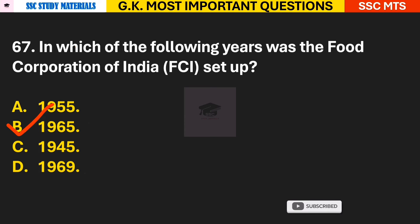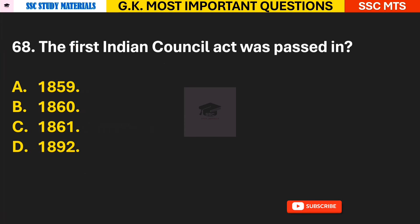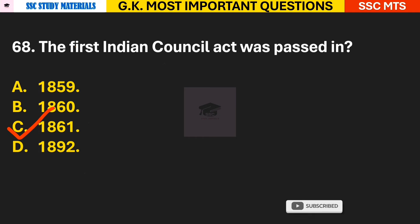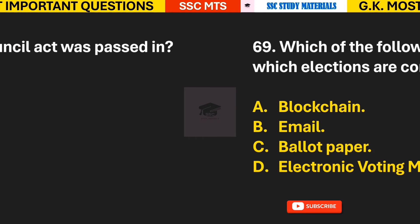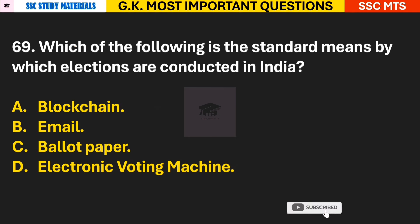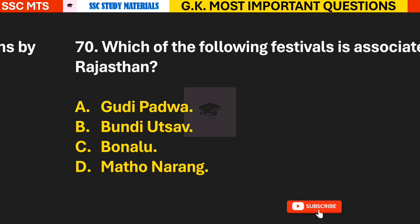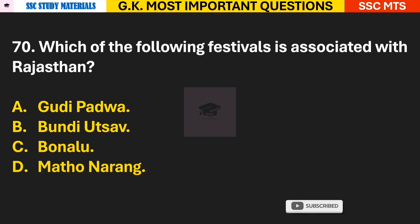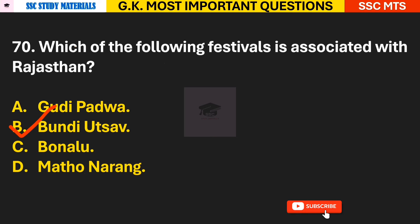Question 67: In which year was the Food Corporation of India (FCI) set up? Answer B — the Food Corporation of India was set up in 1965. Question 68: The first Indian Council Act was passed in which year? Answer C — it was passed in 1861. Question 69: Which of the following is the standard means by which elections are conducted in India? Answer D — the Electronic Voting Machine (EVM).